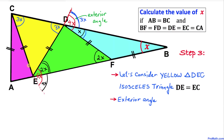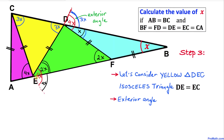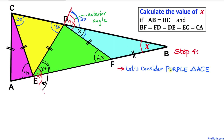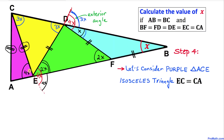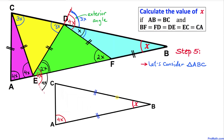This angle is 4X, and this opposite angle is also 4X because they are vertical angles. Now let's focus on the purple triangle ACE. This is also an isosceles triangle since these two sides are equal in length, so this angle and this angle are also going to be of the same value.